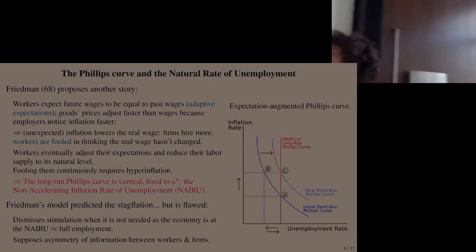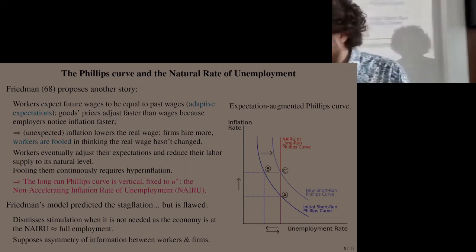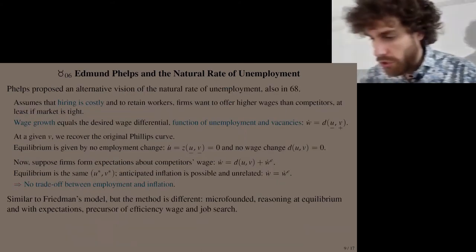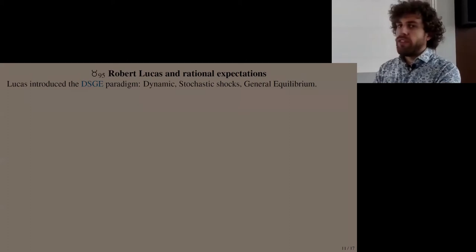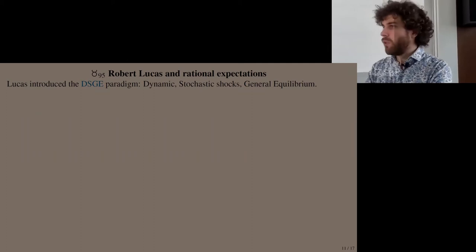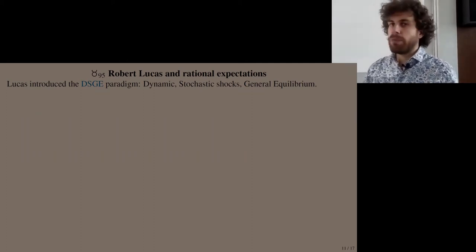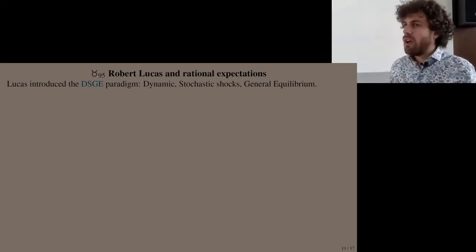Bob Lucas, who won the Nobel Prize in 1995, didn't like this story because it implies workers can be fooled systematically at each period — they don't learn — and they are also less able to form good expectations than employers, which he found to be a problematic assumption.